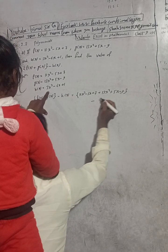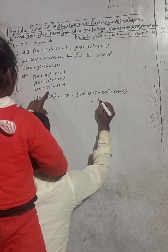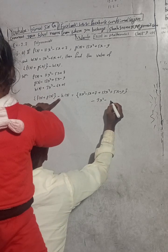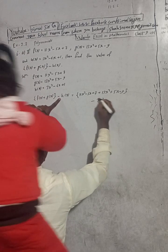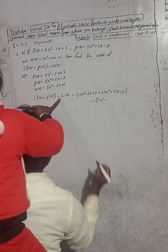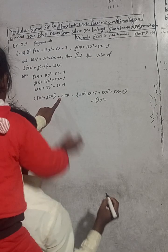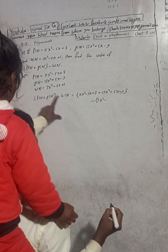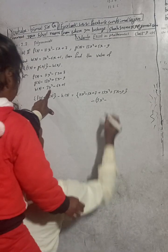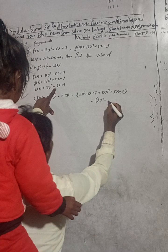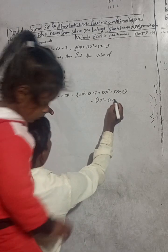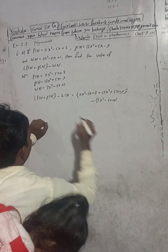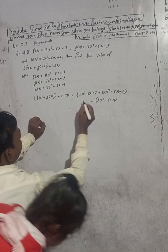So y of x is equal to here — we keep the bracket, and that gives us 3x² minus 6x plus 1. So now we substitute: 11x² minus 5x plus 7, and this is plus, and g of x is 13x² plus 5x minus 9, and then minus 3x² minus 6x plus 1.